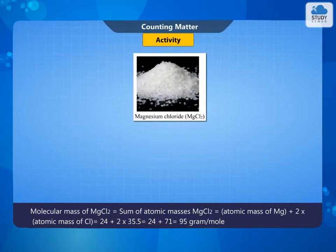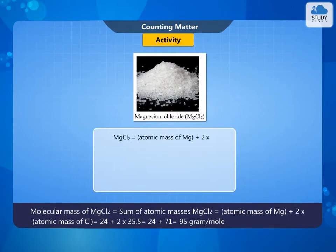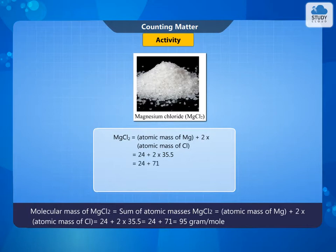Molecular mass of MgCl2 is equal to the sum of atomic masses. MgCl2 = atomic mass of Mg + 2 × atomic mass of Cl = 24 + 2 × 35.5 = 24 + 71 = 95 grams per molecule.